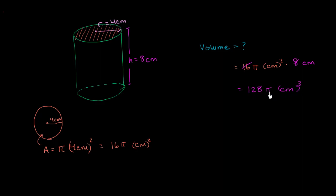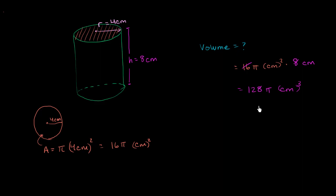Remember, pi is just a number. We write it as pi because it's a crazy irrational number — if you were to write it out, you could never completely write pi: 3.14159 keeps going on, never repeats. So we just leave it as pi. But if you wanted to figure it out, you can use a calculator. This would be roughly 3.14 times 128, so close to about 400 cubic centimeters.